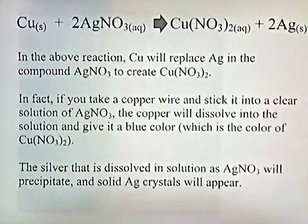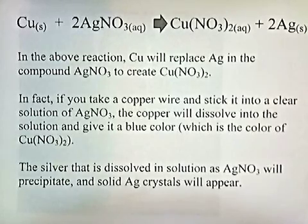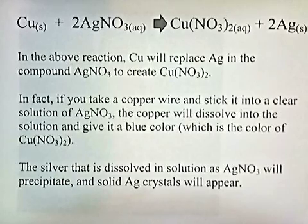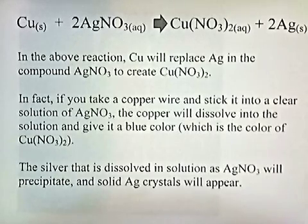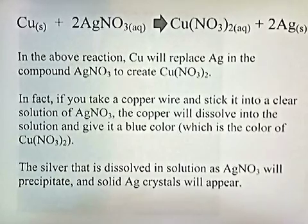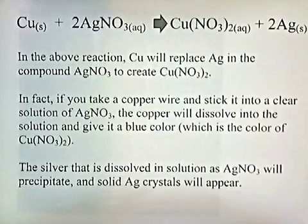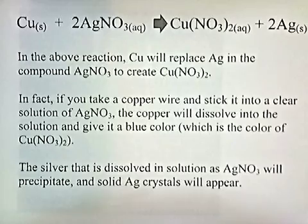If you take a copper wire and stick it into a clear solution of silver nitrate, the copper will dissolve into the solution and give it a blue color, which is the color of copper nitrate. The silver that is dissolved in the solution as silver nitrate will precipitate, and solid silver crystals will appear.